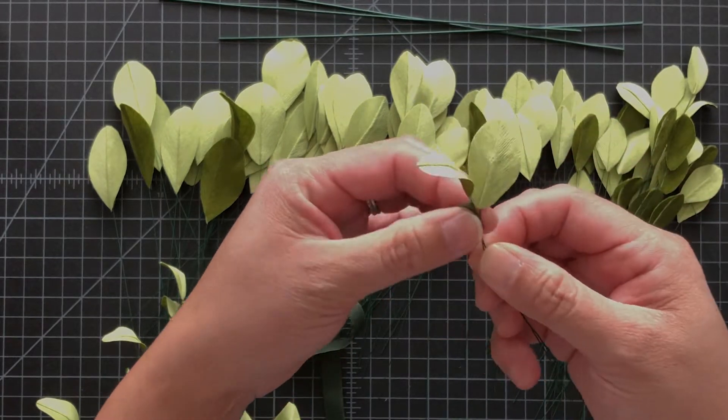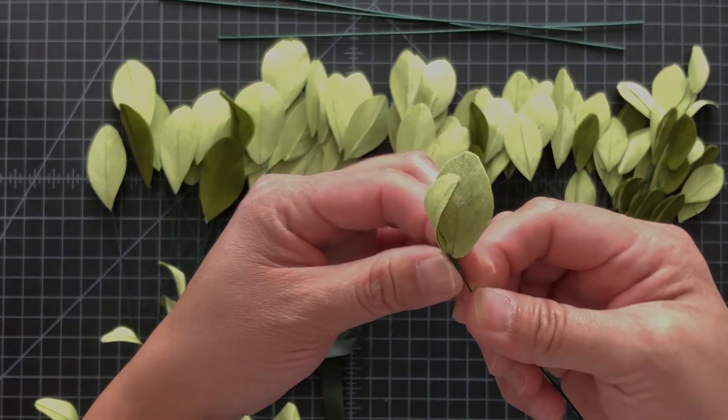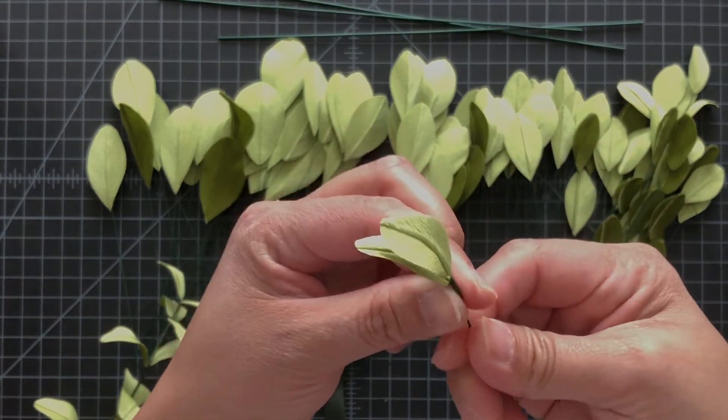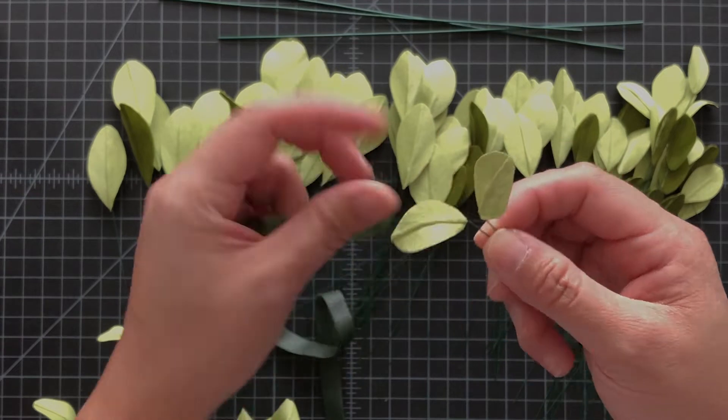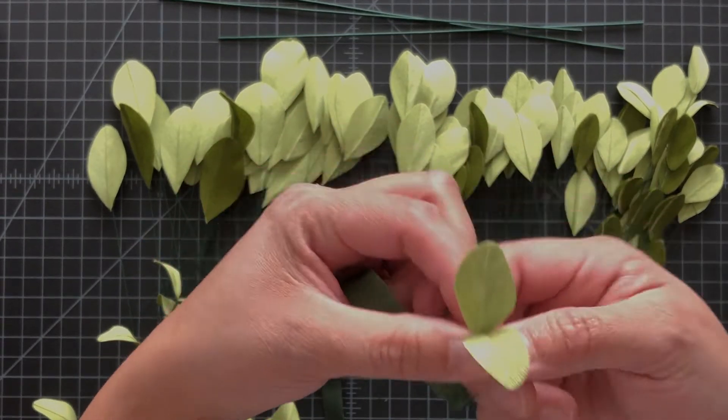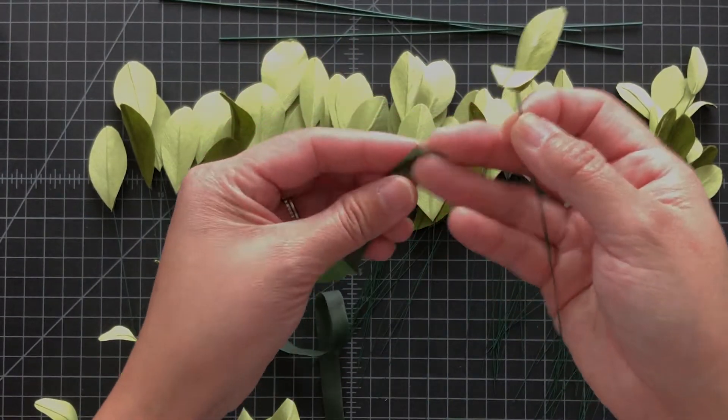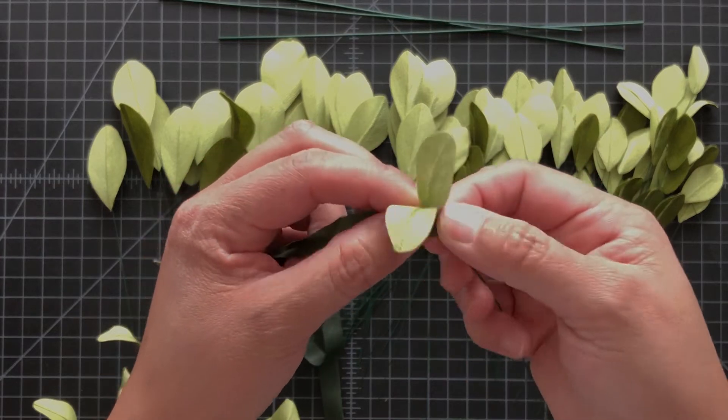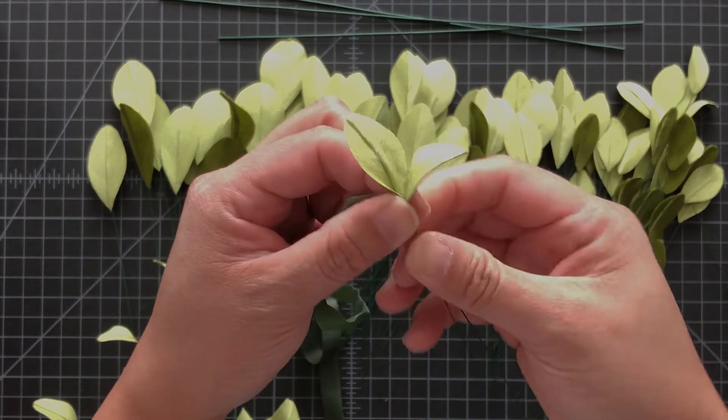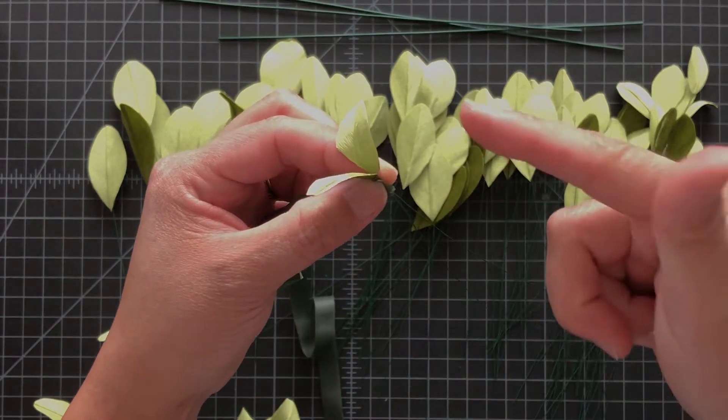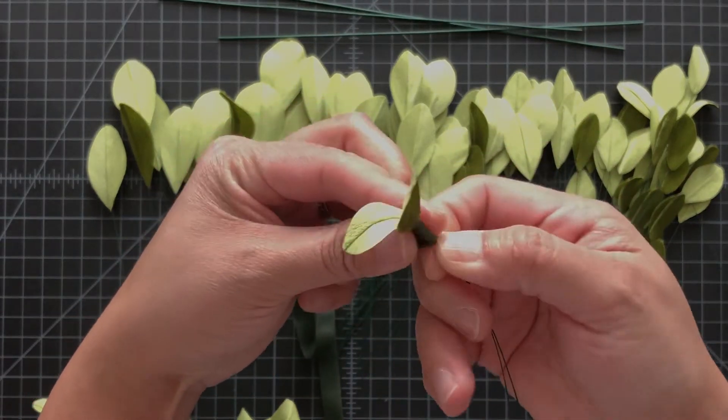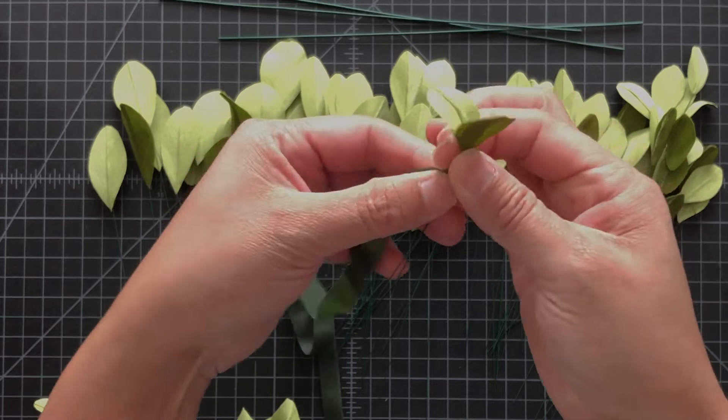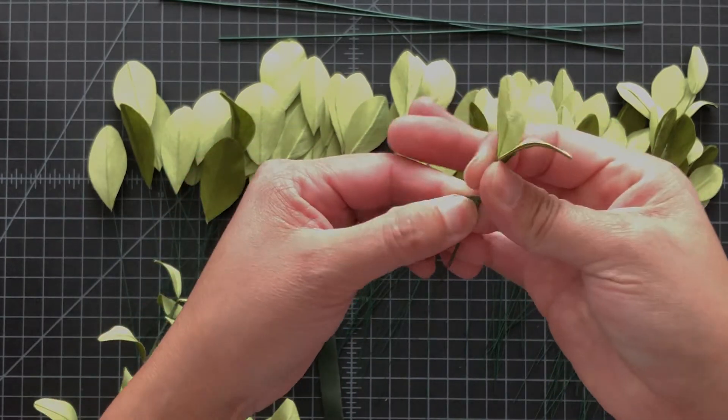If the tape slides, don't worry about it. What you can do is actually match the leaves like this. This might be easier to start until you understand the rhythm of how to use the tape. You're going to strap it a couple times and then start twirling it down.